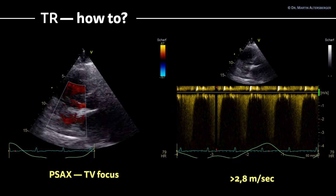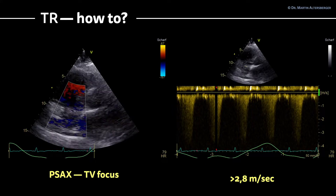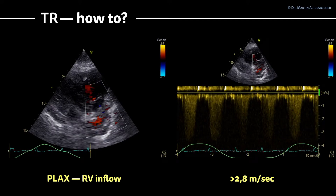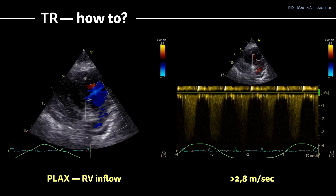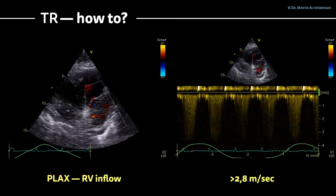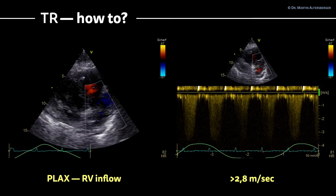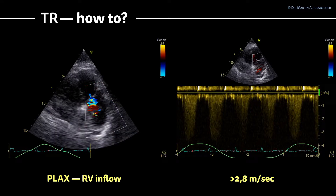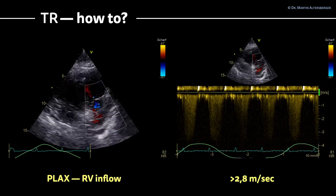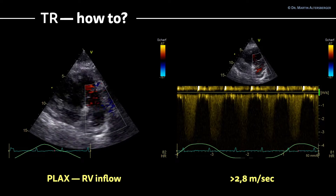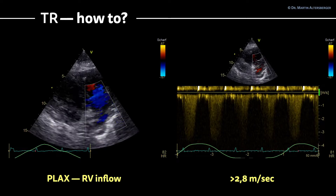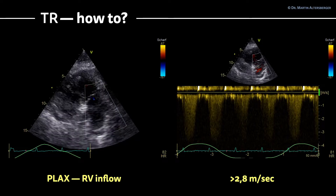If this also doesn't work, you can acquire another view — the parasternal long axis view. In the parasternal long axis view, you simply tilt the transducer down towards the right ventricle, and then you see the tricuspid regurgitation angulated optimally. Sometimes this is the best view to acquire an optimal signal. Using continuous wave Doppler here, you again see that the signal exceeds 2.8 m/s and is also in the range of 3.5 to 4 meters per second.